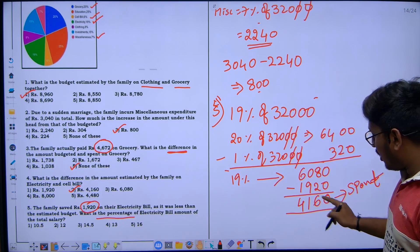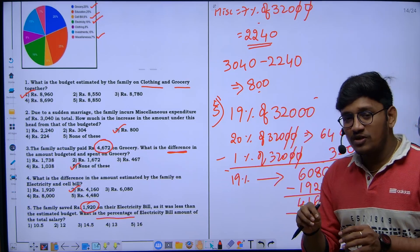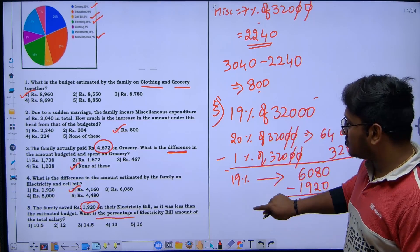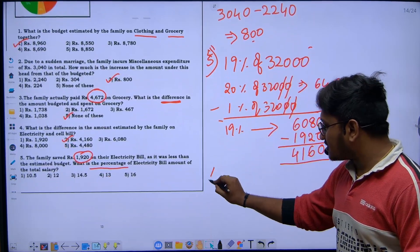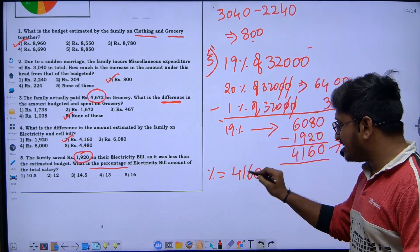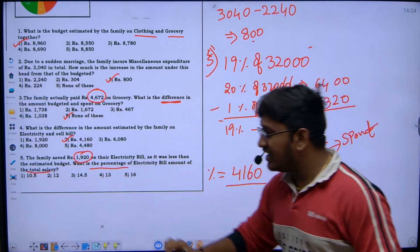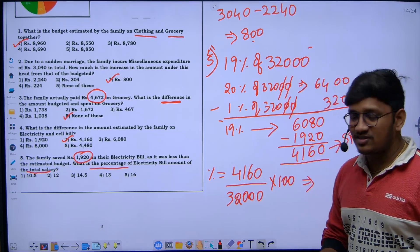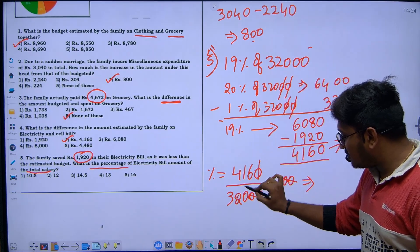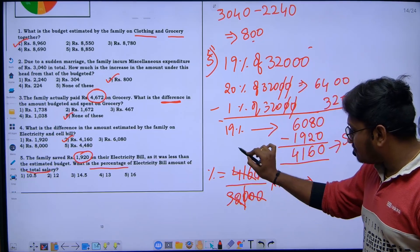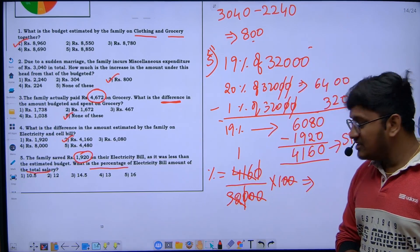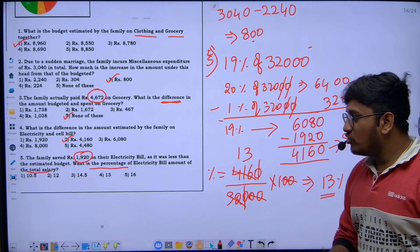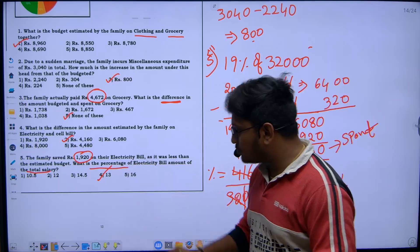The family spent 4,160 on electricity. But they are asking what percentage of the electricity bill is of the total salary. So we calculate: 4,160 divided by 32,000 multiplied by 100. The zeros cancel, leaving 4,160 divided by 320. 32 goes into 4,160 — 32 one time is 32, remainder 96, and 32 three times is 96, giving 13. So the answer is 13% — option 4 is correct.